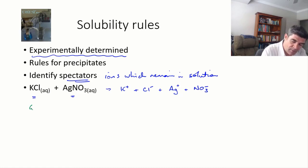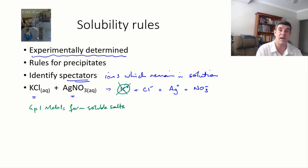Well, one thing you may remember is the group 1 metals form soluble salts. So that means that potassium being a group 1 metal is always going to form something that is soluble, so therefore it's not going to be part of a precipitate.